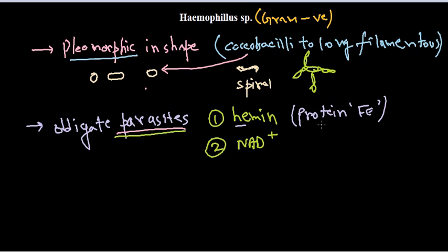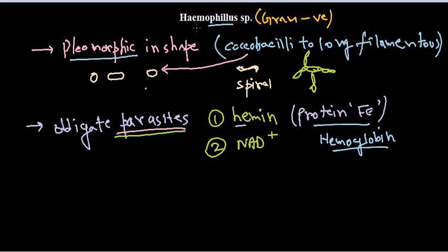Since they require a protein with heme and iron, and our body contains hemoglobin — a protein with heme in red blood cells — that is why the name is Haemophilus. 'Phile' means love, so Haemophilus means they love heme. They can obtain heme from hemoglobin. That is why they are called Haemophilus species.